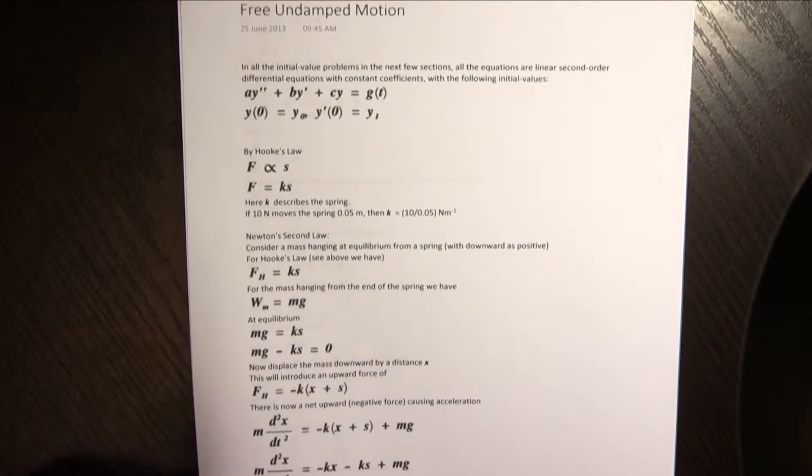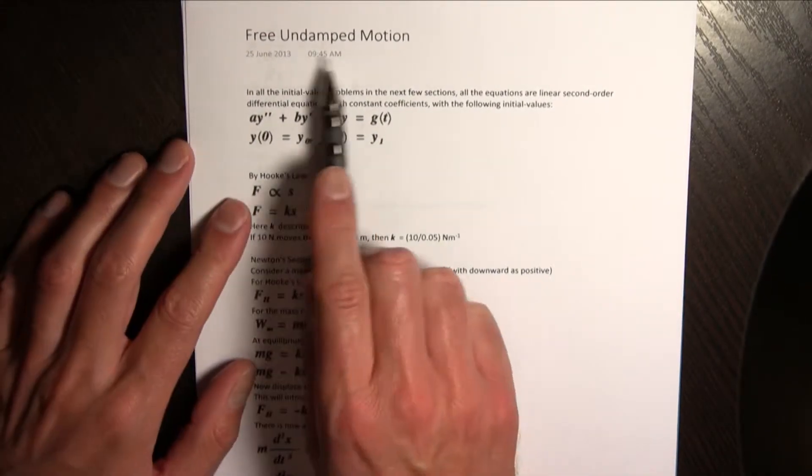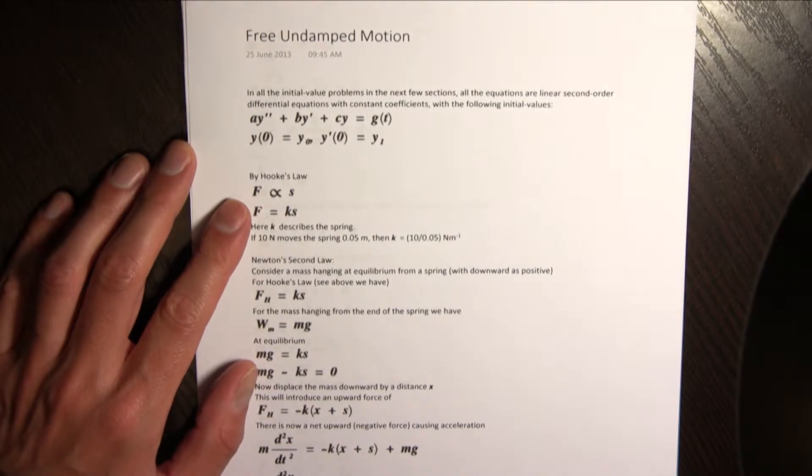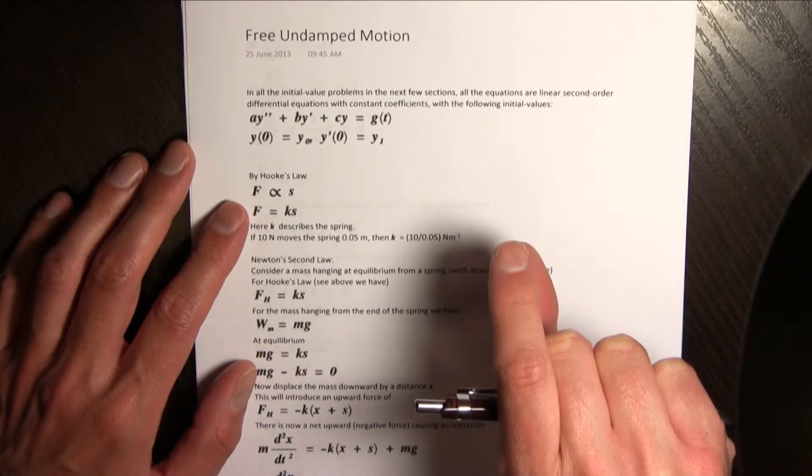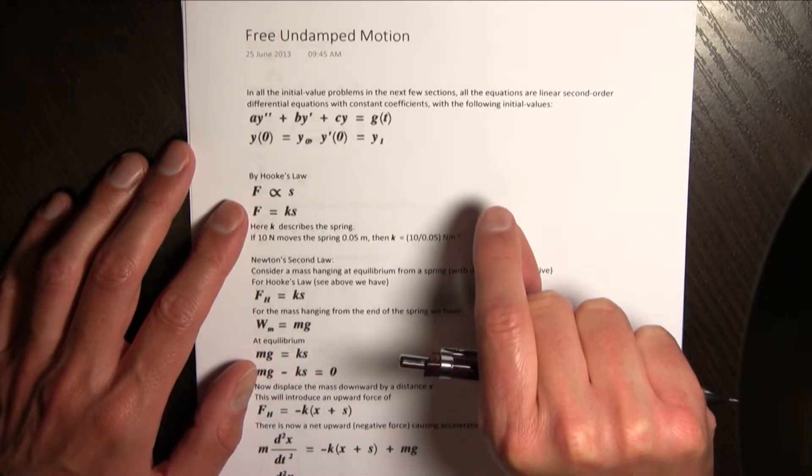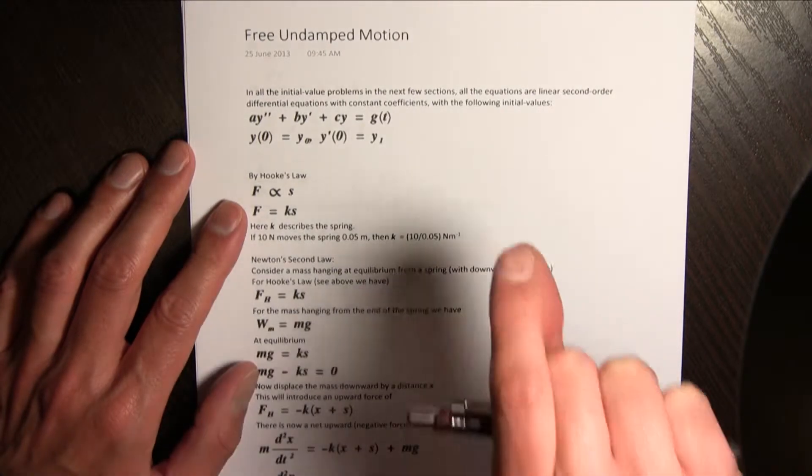Now the first linear model that we are going to look at is free undamped motion. So that will be akin to a spring, a mass just hanging from a spring and pull down a little bit and let go so it's going to oscillate up and down.